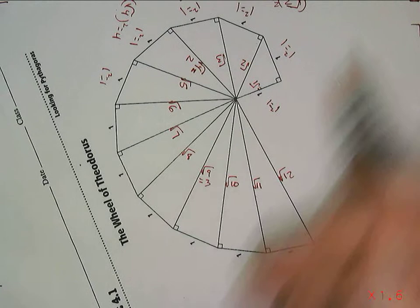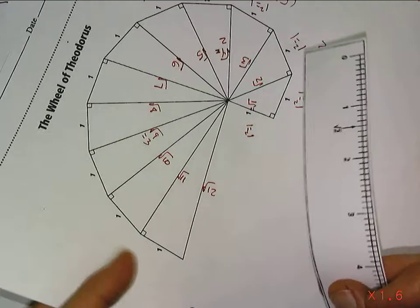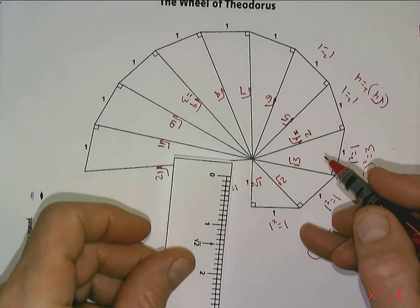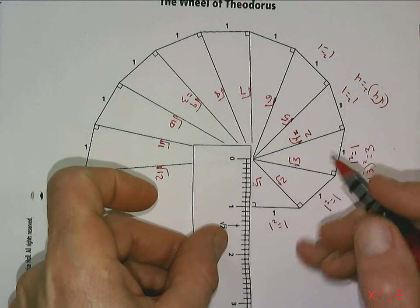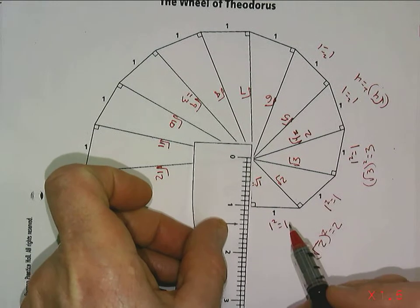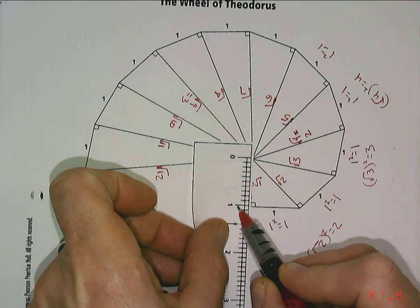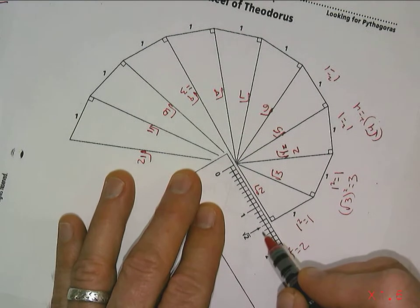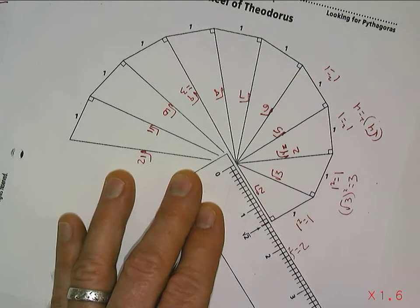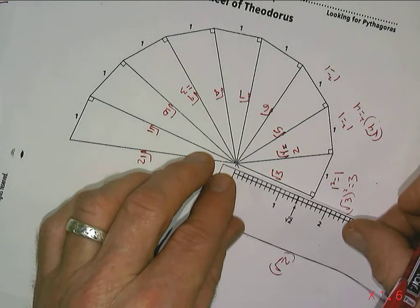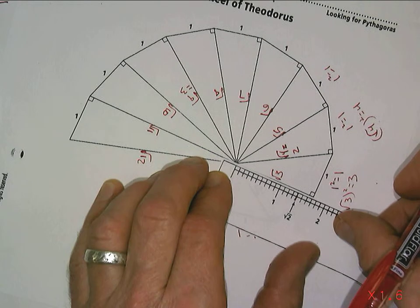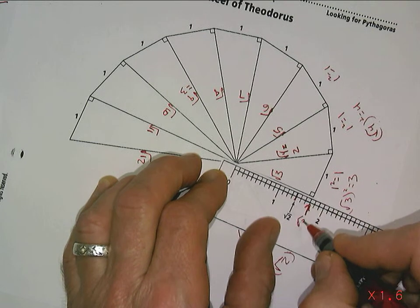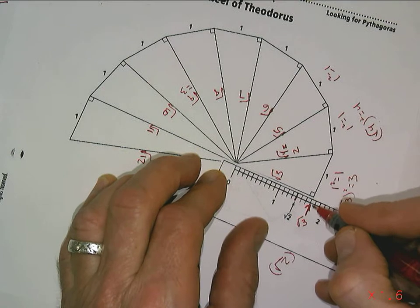The idea now is to get good at approximating how long these lengths actually are. Using this ruler, we can measure each one: the square root of one is just one, the square root of two is approximately 1.4, and the square root of three, keeping on measuring, is about 1.7.